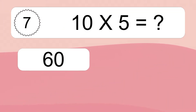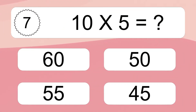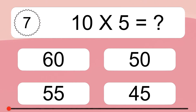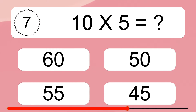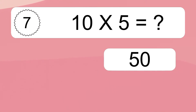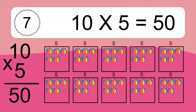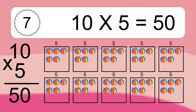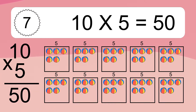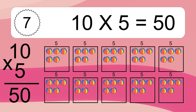10 times 5 equals what? 10 times 5 equals 50. We have 10 boxes, and each box has 5 colorful balls inside. If you count all the balls in all the boxes together, you will have 10 times 5 balls. This equals 50 balls.